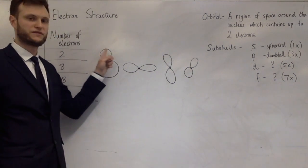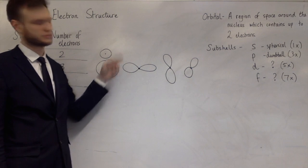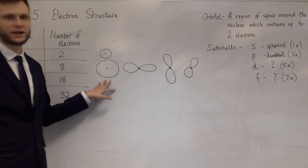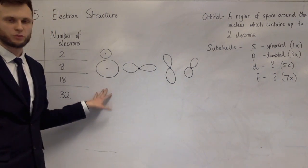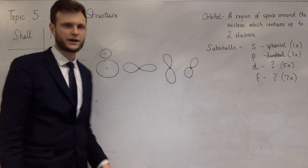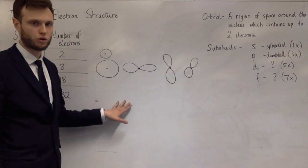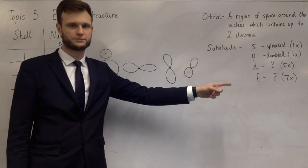So back to the shells. The first shell has one S orbital. The second shell has one S orbital and three P orbitals. The next shell has one S orbital, three P orbitals, and five D orbitals. And then the fourth shell has one S orbital, three P, five Ds, and seven Fs.